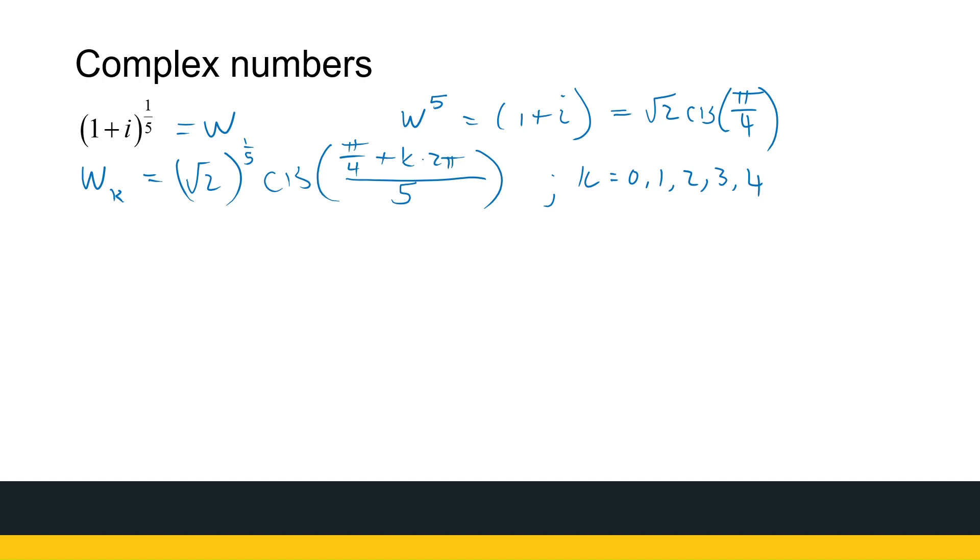So let's get started. We will generate solutions w0, w1, w2, w3, and w4. It's root 2 to the power of 1 over 5, so that's 2 to the power of 1 over 10, or the 10th root of 2. Cis, k is 0, so I've got pi over 20. 2 to the power of 1 over 10, cis, k is 1, so I've got pi over 4 plus 2 pi divided by 5, that should get you to 9 pi over 20.